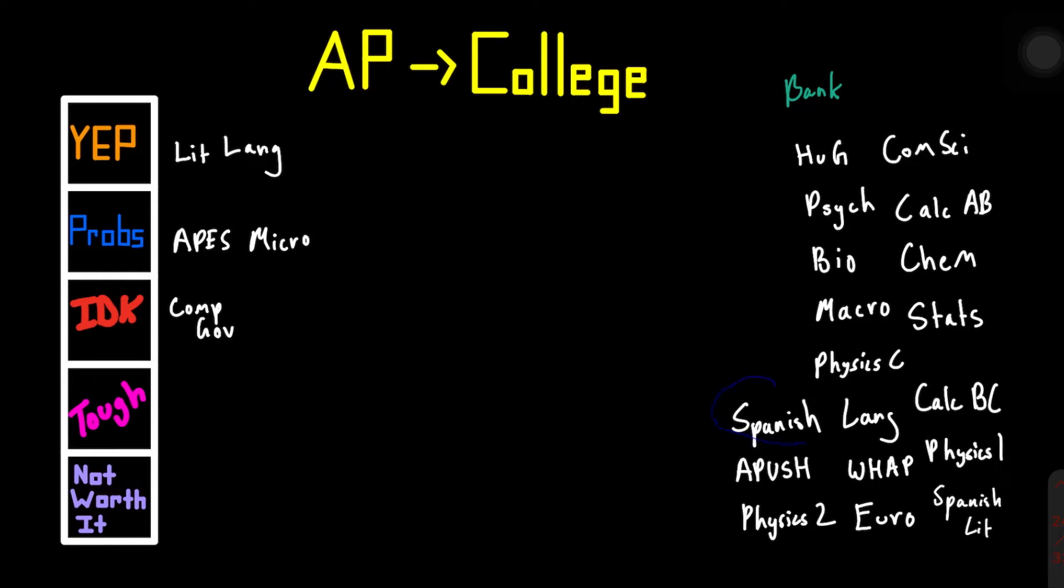But Spanish LANG. Sorry, this is a little confusing now. Spanish LANG is not exactly relevant because language credits aren't really a necessity, especially at UT. So I took the exam. I got a five, but I didn't really redeem the credit. So we'll say it's a tough. I think in specific situations, maybe it'll count. I don't think it was not worth the time. But it definitely didn't help for me. And maybe I shouldn't have spent the $90 to $100 to take that AP exam.